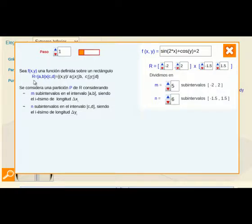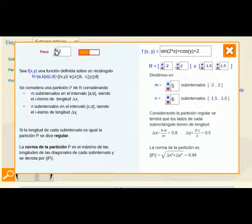En este caso es el rectángulo R y esa partición se consigue teniendo M por N subrectángulos resultado de dividir el intervalo AB en M partes y el intervalo CD en N partes.